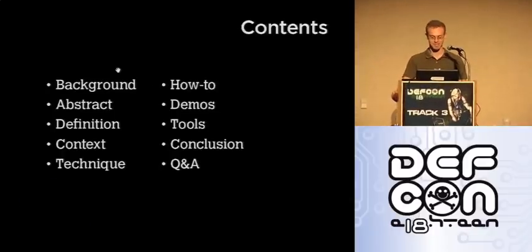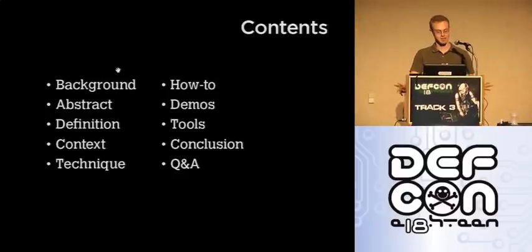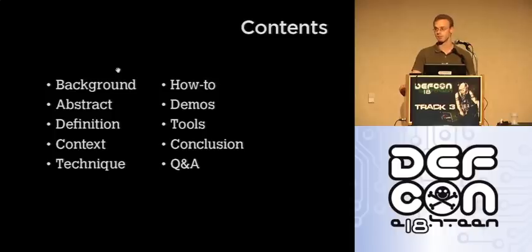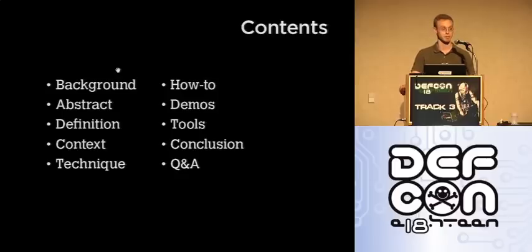A little bit of background. The contents of this talk are going to be a little bit of background on me, an abstract of what format strings are, how you exploit them, a definition of the way in which C functions are made vulnerable to it, context in terms of old, current, and new attacks. I'm going to show you my new techniques for exploiting them and actually go through a couple of demos before showing you a couple of full exploits, popping root shells without doing any work. Then I'm going to show you my tools, how I do it, finally leading to a conclusion and Q&A.